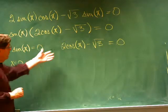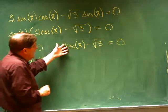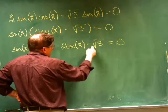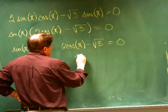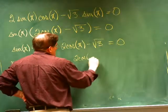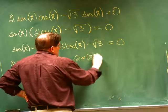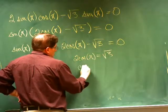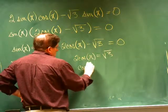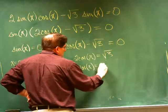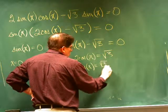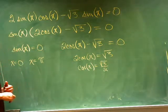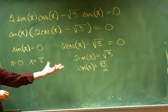Now let's worry about the other factor. If I add the square root of 3 to both sides and then divide both sides by 2, I get that the cosine of x is equal to the square root of 3 over 2. So I'm looking for an angle whose cosine is the square root of 3 over 2.